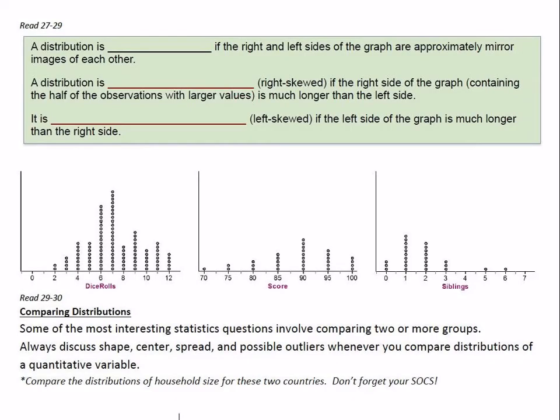The first blank here, it says a distribution is blank if the right and left sides of the graph are approximately mirror images of each other. And that's when we're looking for symmetric. Now, in reality, nothing can be perfectly symmetric, right? But it can be really close. So we always say it's roughly or approximately symmetric. It looks pretty smooth on both sides. They can be almost mirror images of each other.